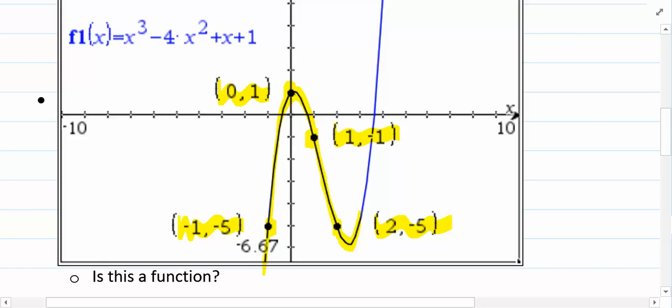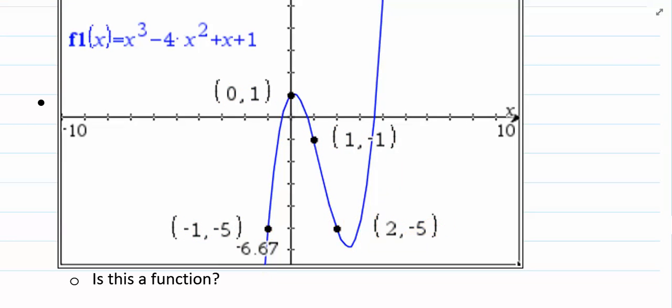So this function is what we would call a continuous function because we have more and more points than what are just shown here at our plotted values. We have all of the infinite points in between shown, and that's why we've connected them with a line. Clearly, again, since we used function notation, and it appears that every input has exactly one output, this is indeed a function.